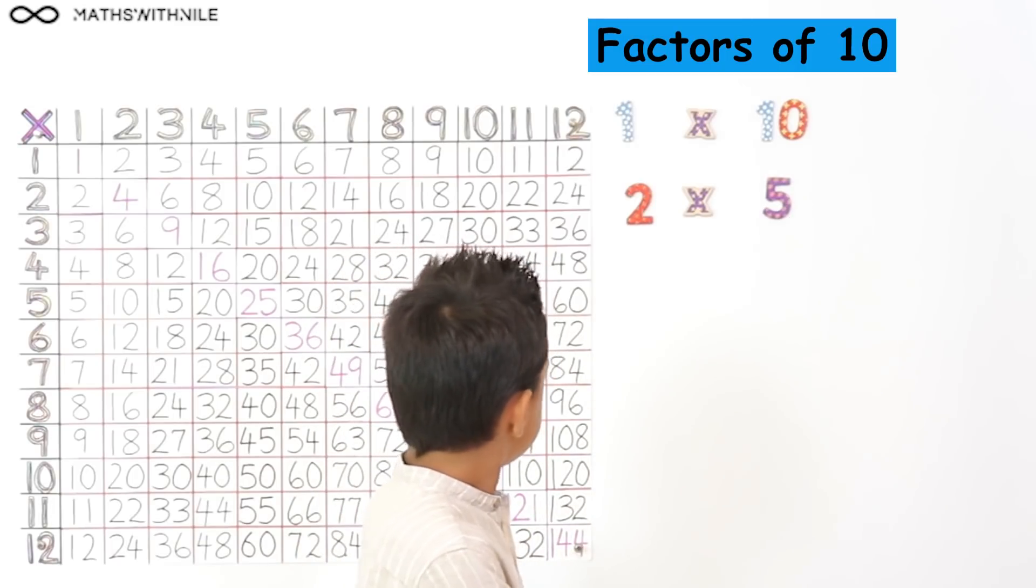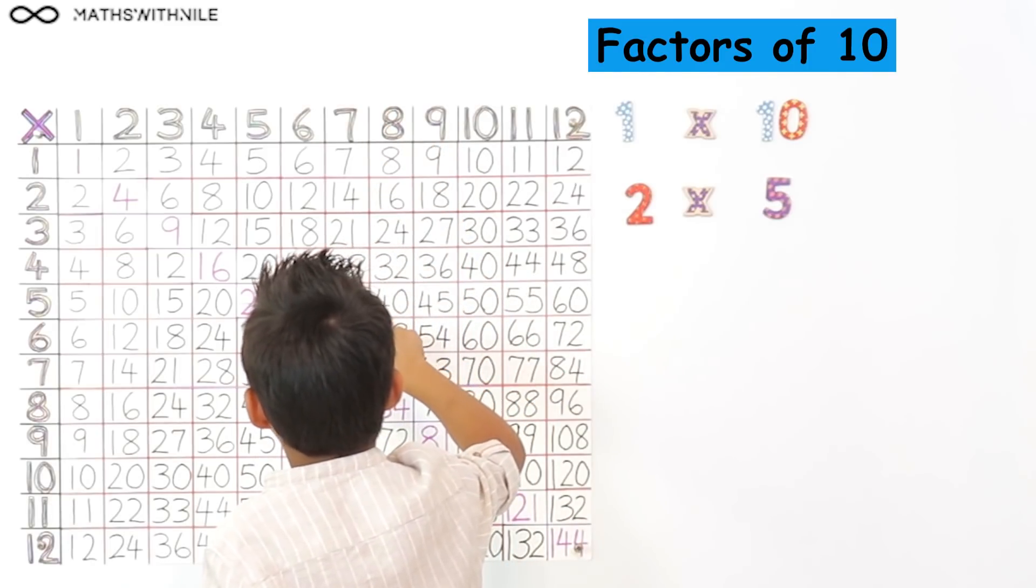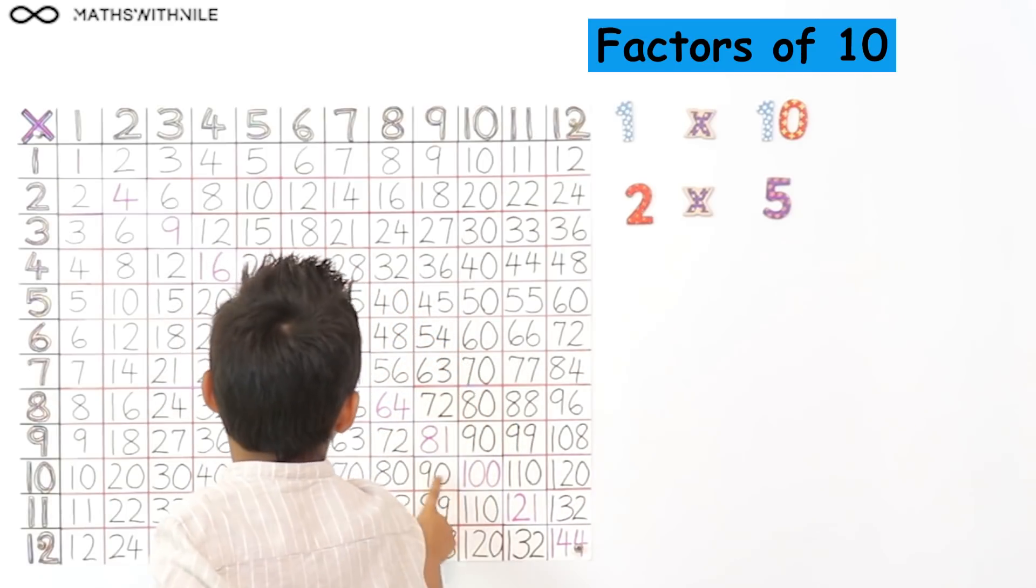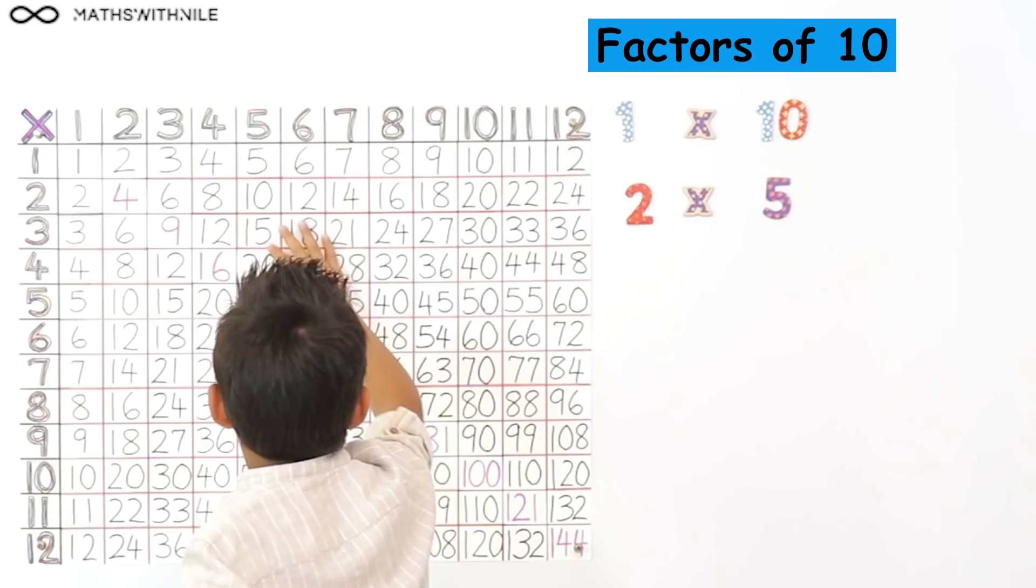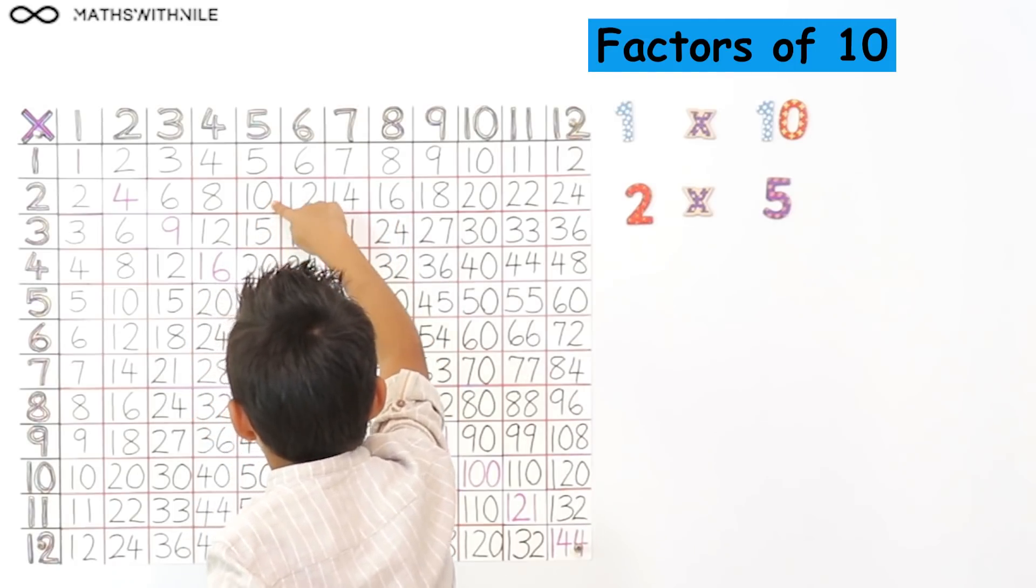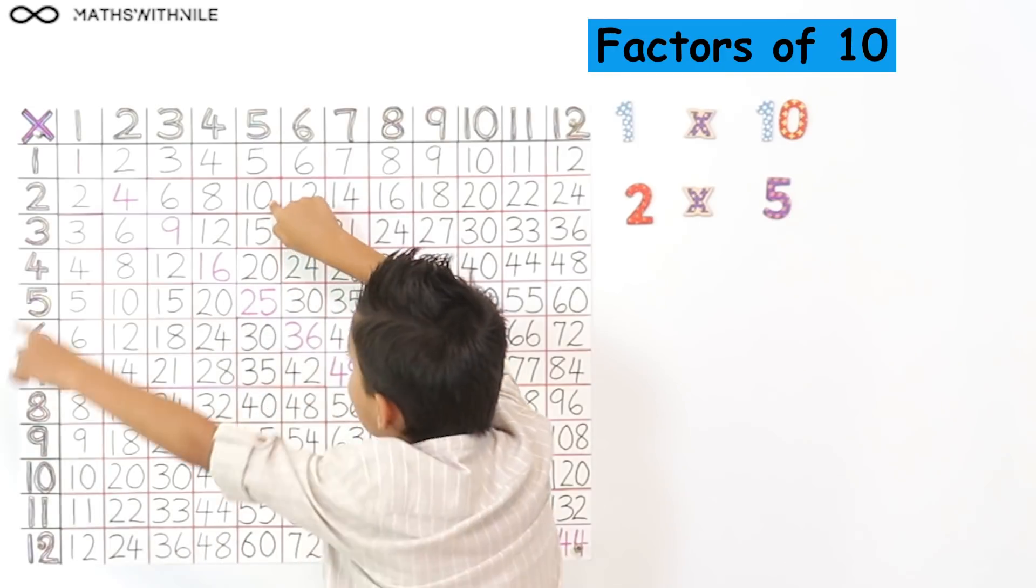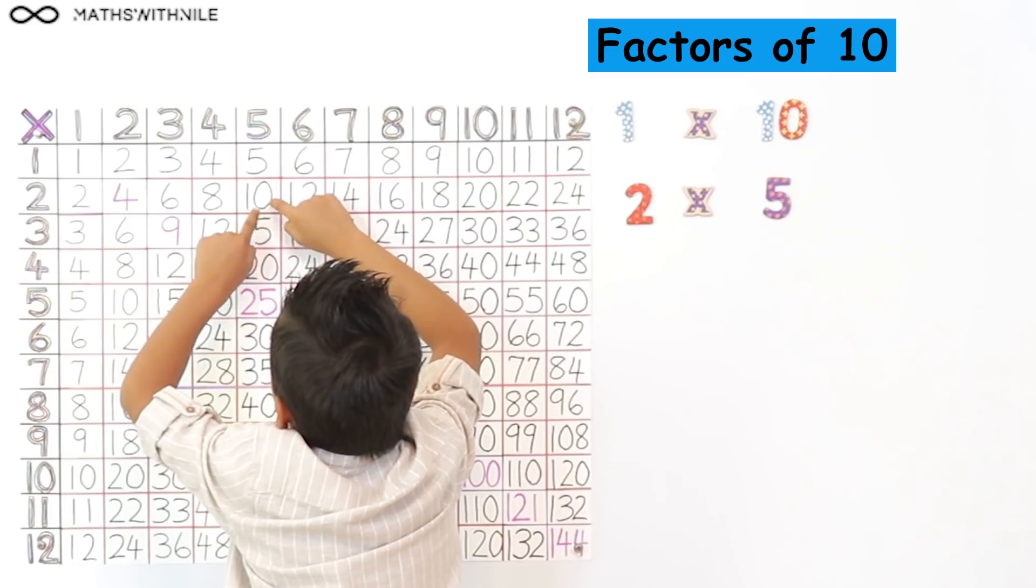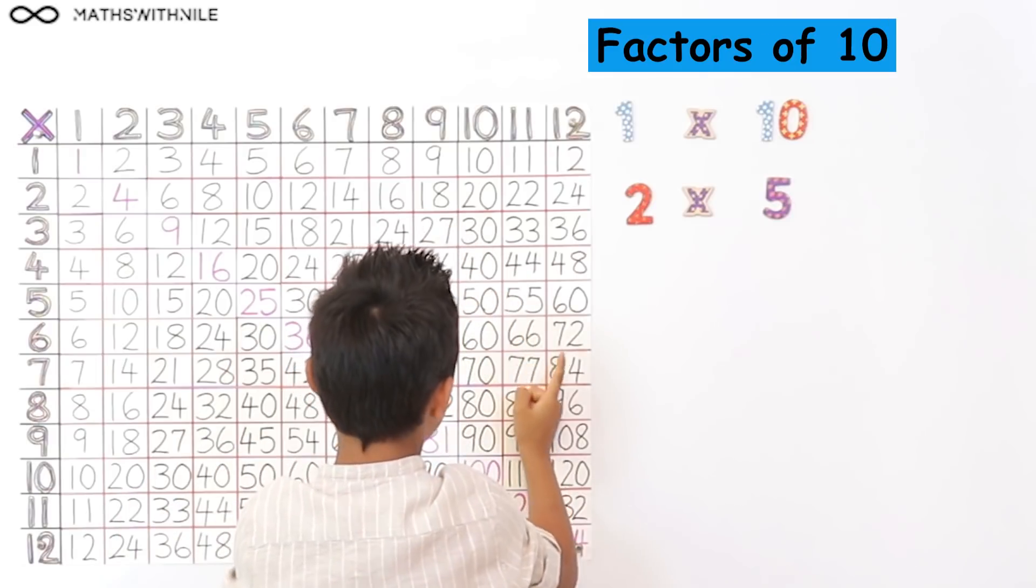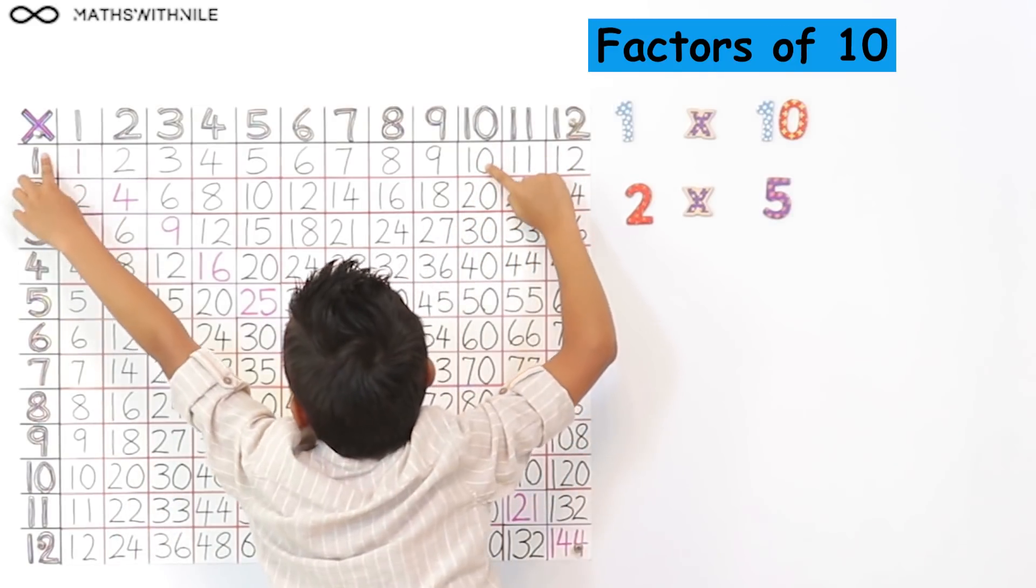Now look at your multiplication grid and can you find 10 on the inside and find the 2 numbers that times to give 10? So are you seeing any 10s there? 10. Good, so can you show us on the grid what you've just done on the board? So which 2 numbers times to give 10? 2. 5 and 2. Good, and can you find the other 10 that will give us the factors 1 and 10? Here. There you go, and show us the 1 and 10.